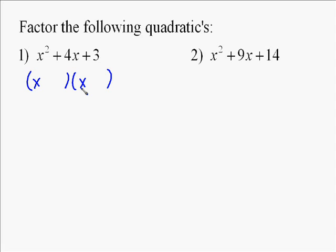So in this case, we start our two parentheses because a quadratic always factors into two binomials. We realize that x times x is going to give us our x squared, which is what we're looking for there.